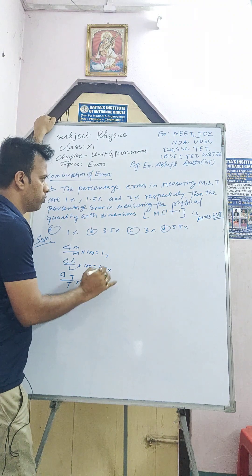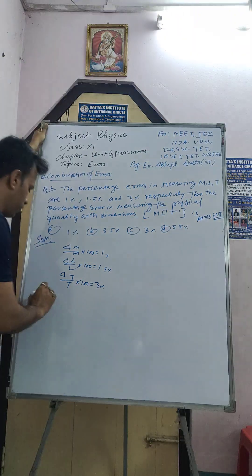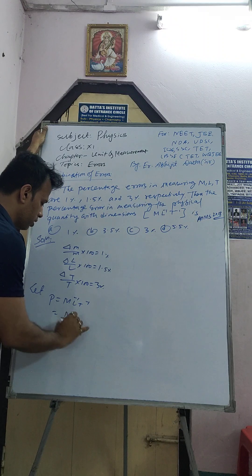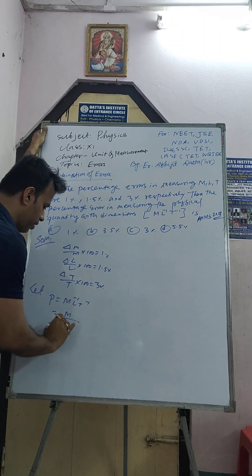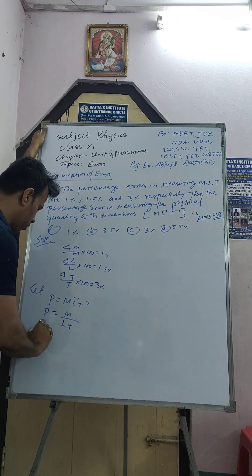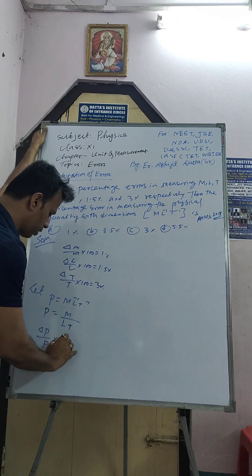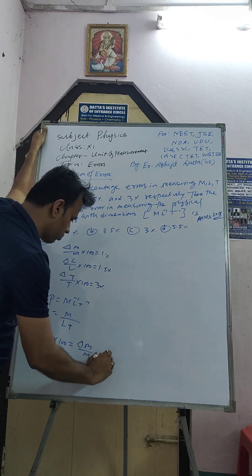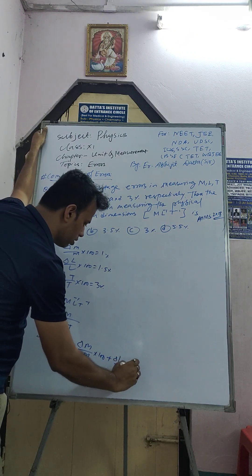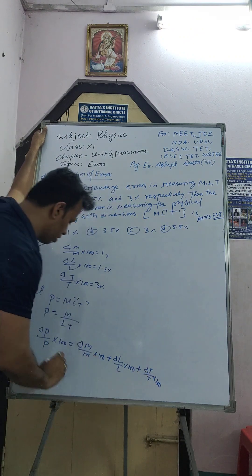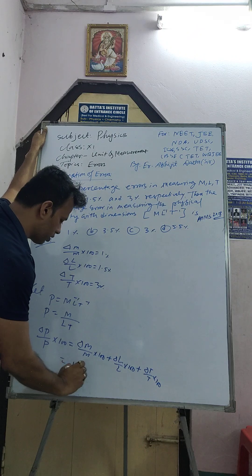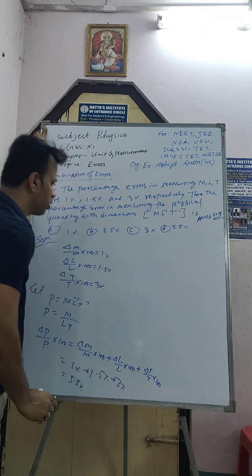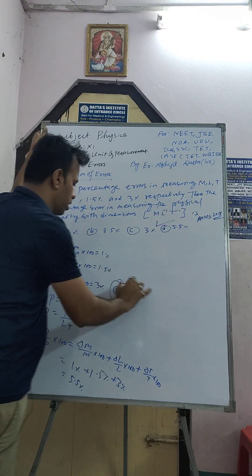Let the physical quantity P equal ML⁻¹T⁻¹, which we can write as M by L into T. Applying the formula: del P by P into 100 equals del M by M into 100 plus del L by L into 100 plus del T by T into 100. Substituting: 1% plus 1.5% plus 3% equals 5.5%. Option D is the correct answer.